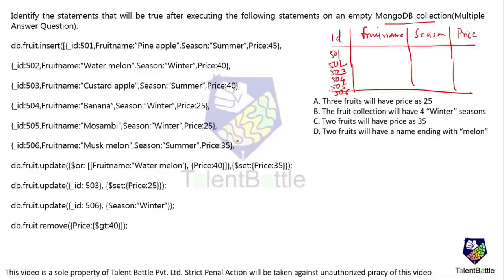Up to 506 the schema and table are ready. Now we perform the queries. The first update uses the dollar-or operator — we have to update records where fruit name is watermelon OR price is 40, and set the price to 35. So we check whether fruit name is watermelon, then set price to 35, or if price is 40, also set it to 35.